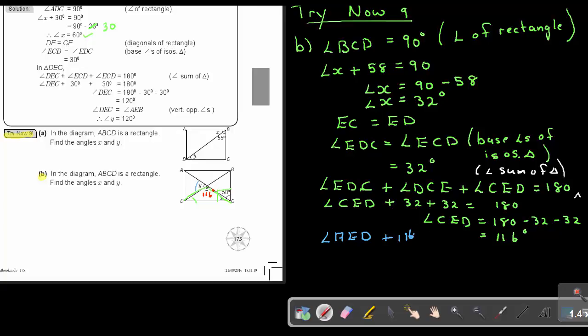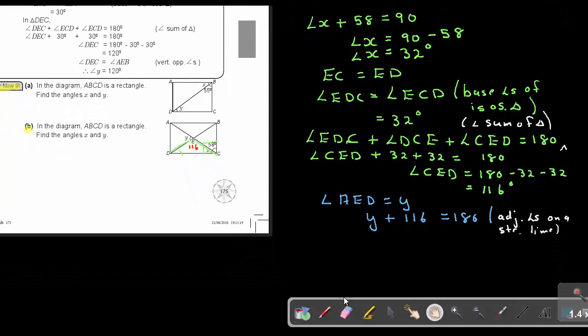Let's just go a little bit lower. So angle AED, and this is equal to Y. So I can say Y plus 116 equals 180. And that is going to be, if I give the reason, is the adjacent angles on a straight line. So if I move it up, then I can say this Y equals 180 minus the 116. And if I subtract that, I'm going to get Y is 64 degrees. And that's going to be my answer of Y.